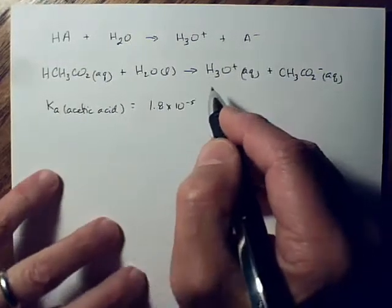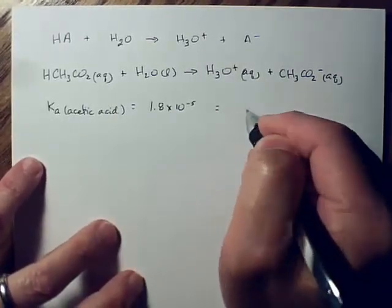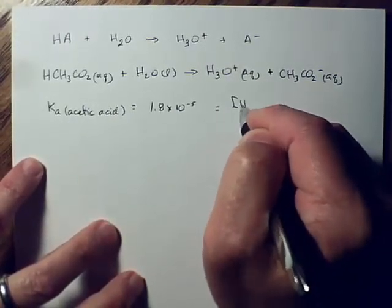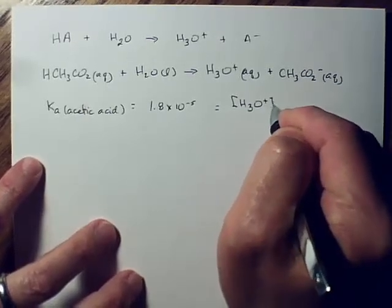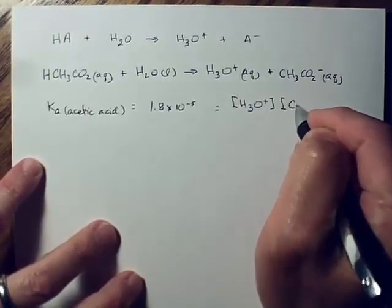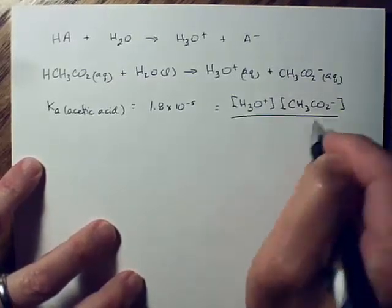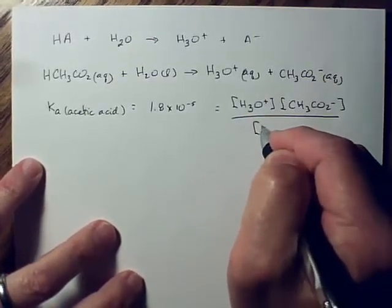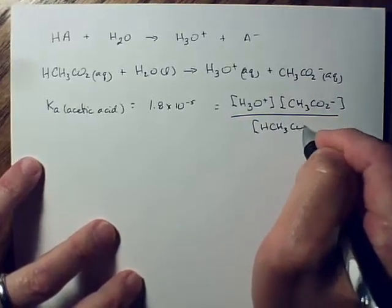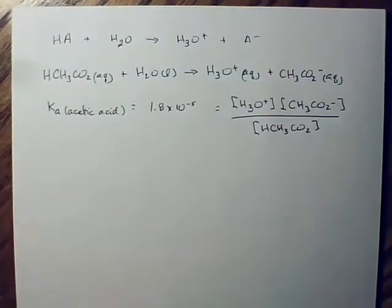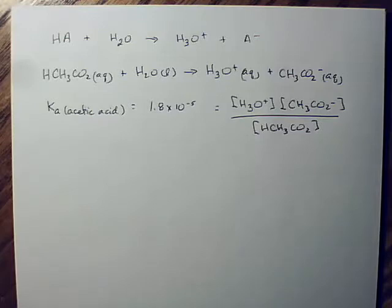You don't. So, what we're going to do is we're going to say that expression for Ka is always the molar concentration of the products multiplied together over the molar concentration of the original acid. We're part of the way there, but now we need what's called an ice table.